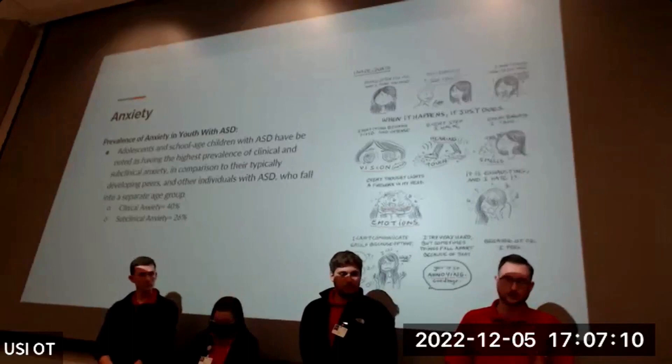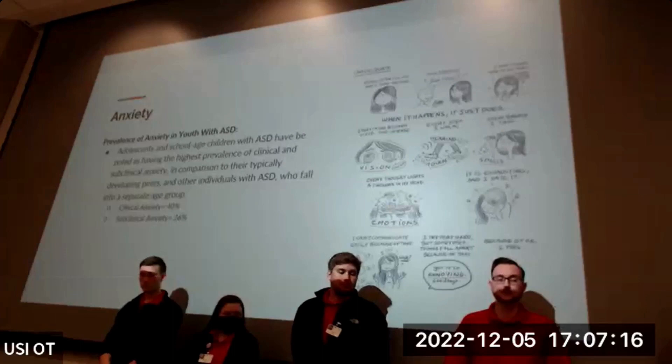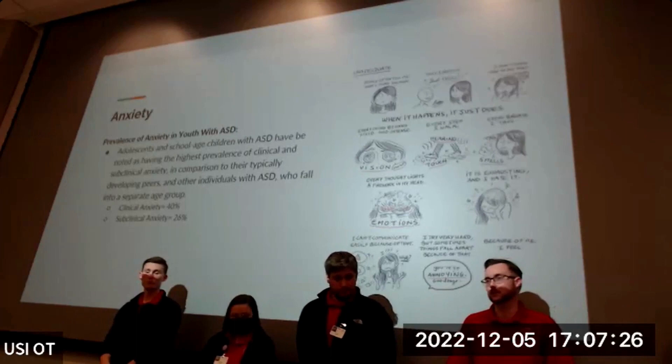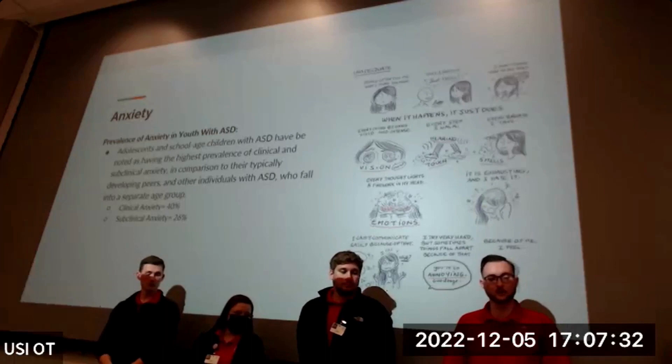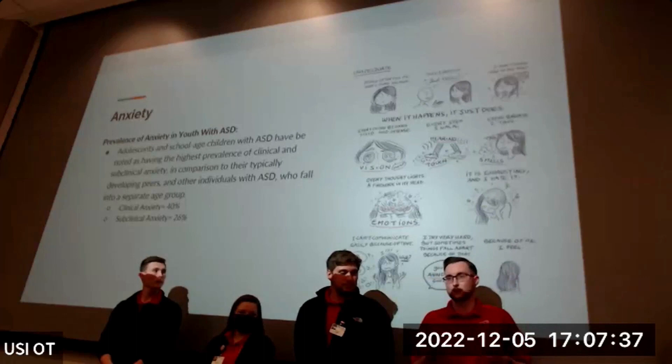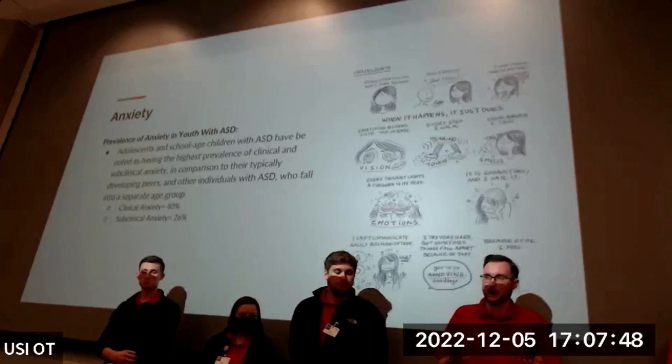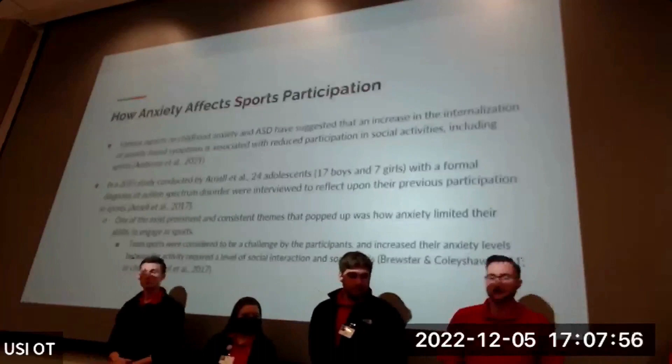Regarding the prevalence of anxiety, adolescents and school-age children with ASD have the highest prevalence of clinical and subclinical anxiety compared to typically developing peers and other individuals with ASD in separate age groups. Clinical anxiety occurs in approximately 40% of children, and subclinical anxiety in 26%. The primary difference is that clinical anxiety is a formal diagnosis, whereas subclinical anxiety involves symptoms that do not meet diagnostic criteria due to not being sufficiently pervasive in affecting daily functioning.